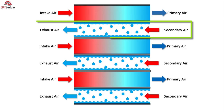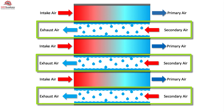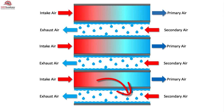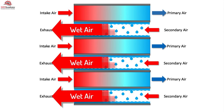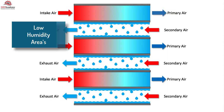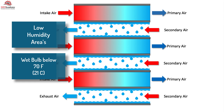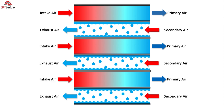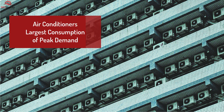Indirect evaporative coolers use two separate airstreams separated by the heat exchanger walls. The secondary airstream uses the evaporative process where water trickles down over air being exhausted from the building or by the use of outside air. This causes some of the water to evaporate and absorb heat from the primary airstream through the heat exchanger wall. The heat exchanger keeps the wet airstream separate from the primary dry airflow to the space. The use of air conditioners contributes to the largest consumption of peak demand on the U.S. electricity grid and is the primary cause of blackouts and grid failures.